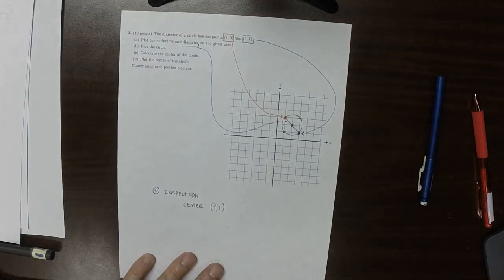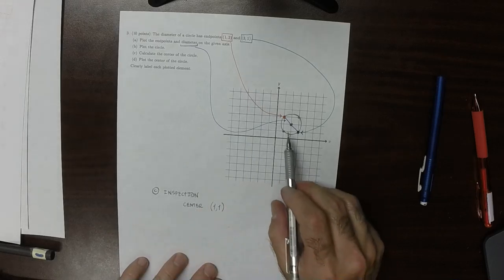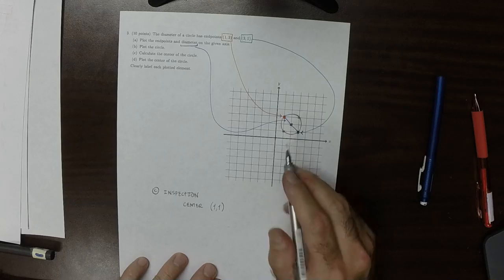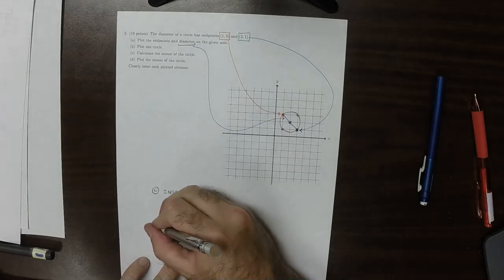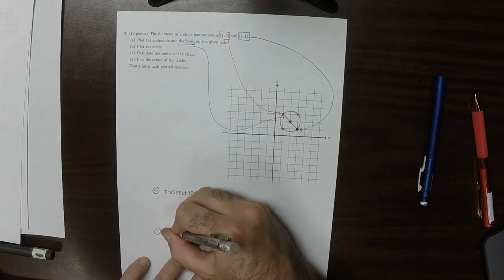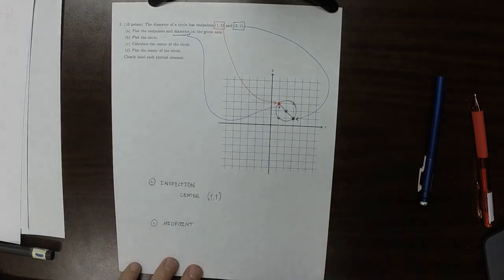And that would be fine. Or you could understand that the center must be the midpoint of these two points. So you could do it like this, the midpoint. And say that, OK, well,